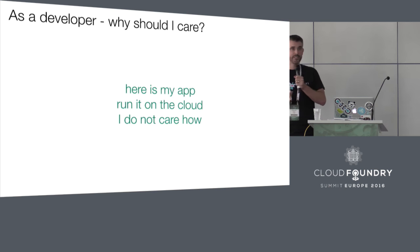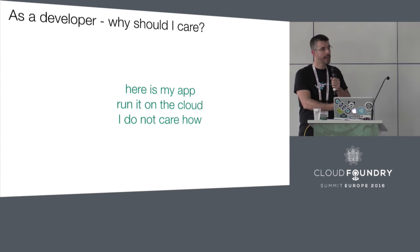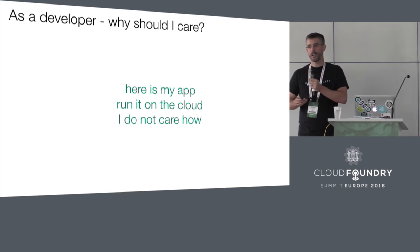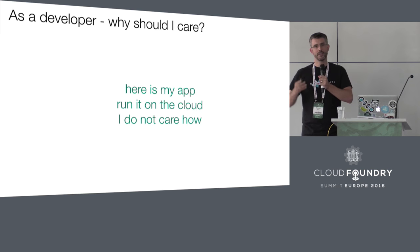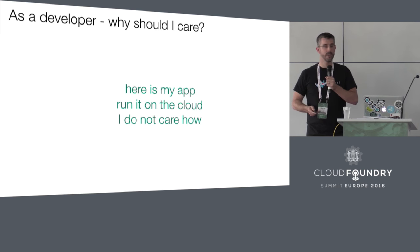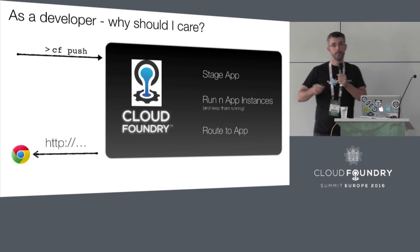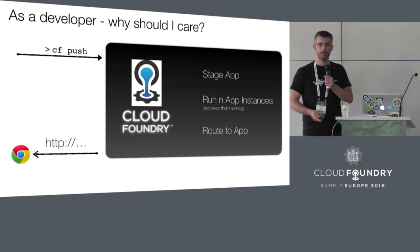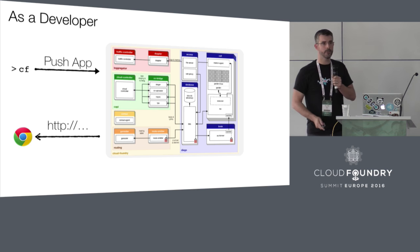Borrowing from Onzi, we have this fantastic developer mantra: here is my app, run it on the cloud for me, I don't care how. And by the developer, I'm not just talking about the person who cuts code — I'm talking about the entire team responsible for developing and running that application. They, by and large, think of Cloud Foundry as this black box. They push their application, Cloud Foundry does its thing and returns a routable endpoint.